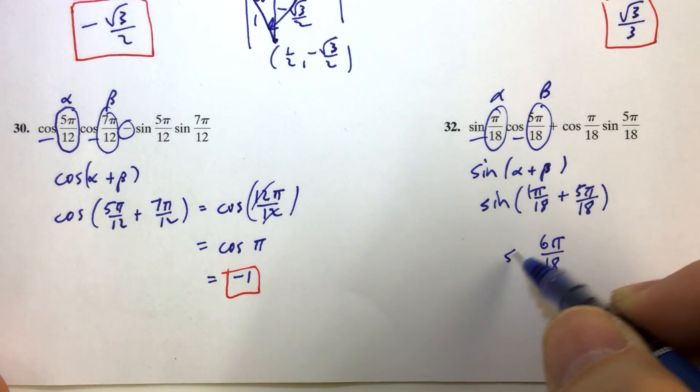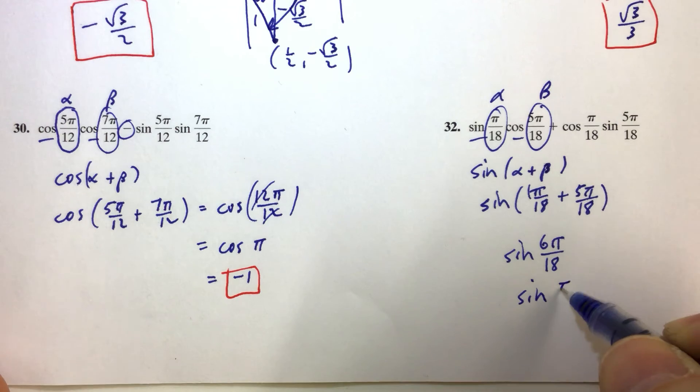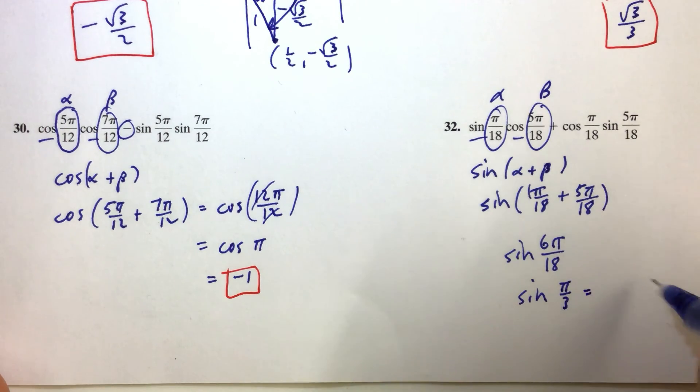So we have sine of 6 pi over 18, which is the sine of pi over 3, and we know that the sine of pi over 3 is radical 3 over 2.